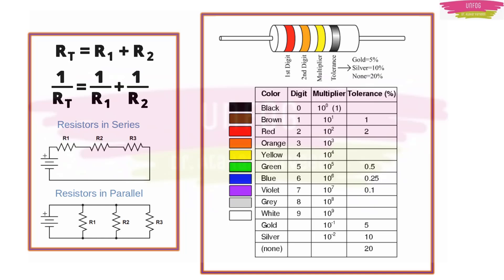So black, brown, red, orange, yellow, green, blue, violet, gray, white. From black to white, you have 0 till 9. And tolerance for gold is plus or minus 5 and for silver, it is plus or minus 10. And if you do not have any band, then it is plus or minus 20. This is about electricity.